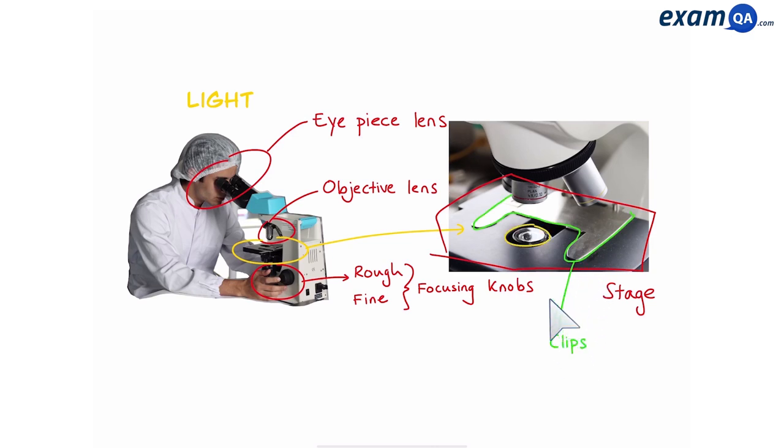Finally, over here we have a light source. The reason this is called a light microscope is not because it weighs less, but rather because it uses light to shine through the specimen and make it visible to the observer.